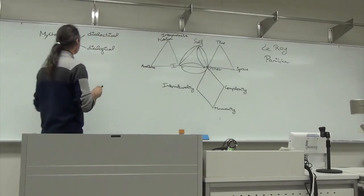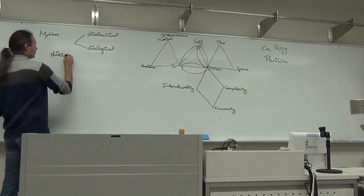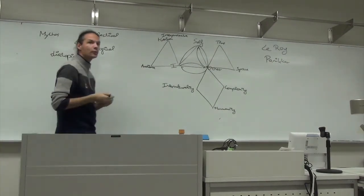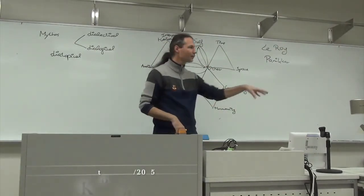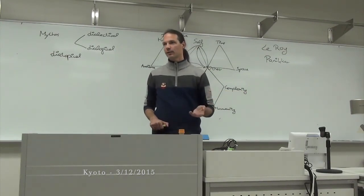And so for this, I'm not going to develop this very much, he then says what we need is a diatopical hermeneutics. Hermeneutic science of interpretation, which goes through the different topoi, the different places where worldviews and discourses are located.